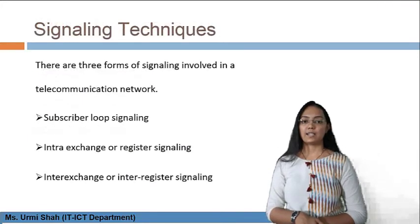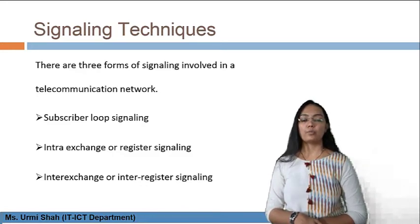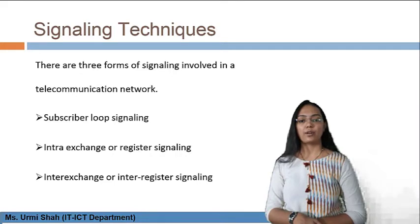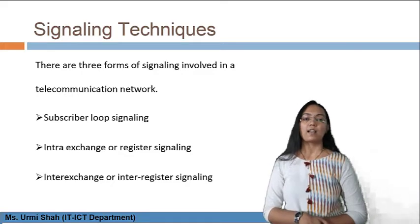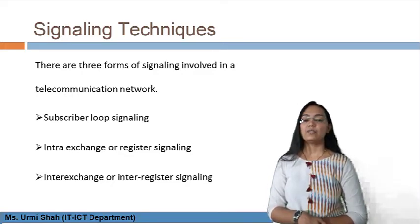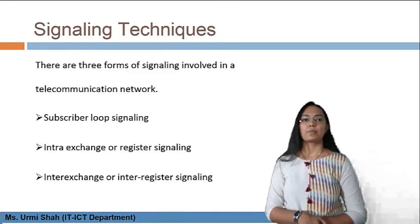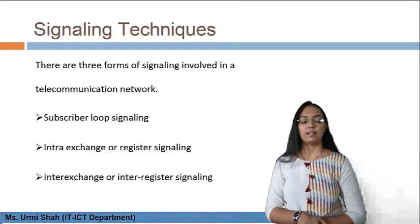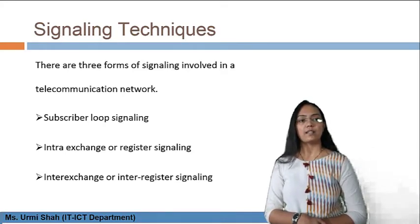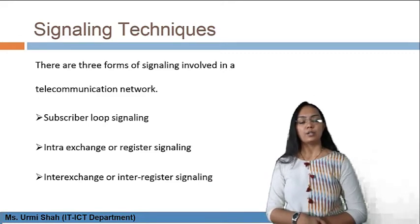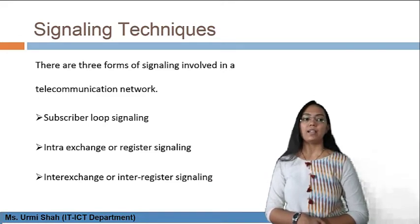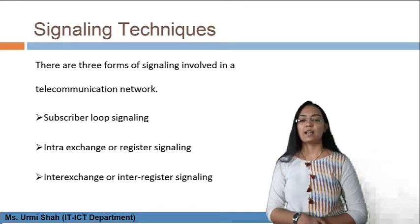There are three different forms of signaling involved in a telecommunication network, which we have already discussed in the previous session. These are: subscriber loop signaling, intra-exchange or registered signaling, and inter-exchange or inter-register signaling. These are the three types of signaling techniques which are widely applicable in telecommunication engineering.